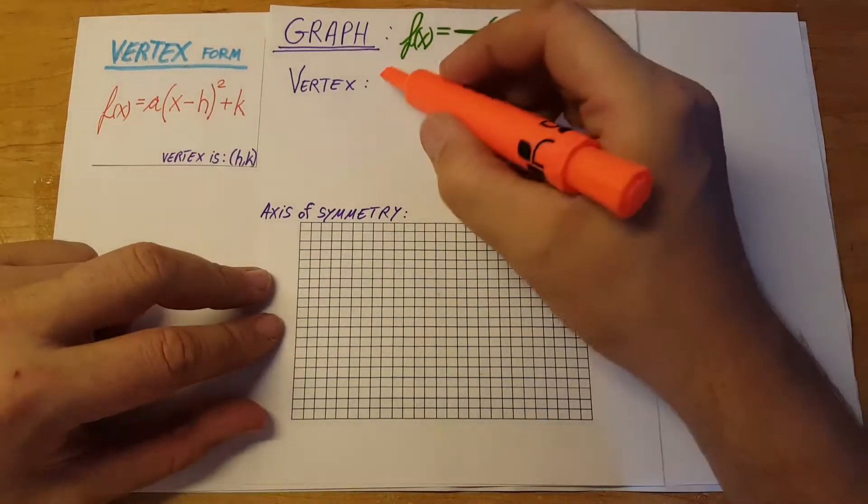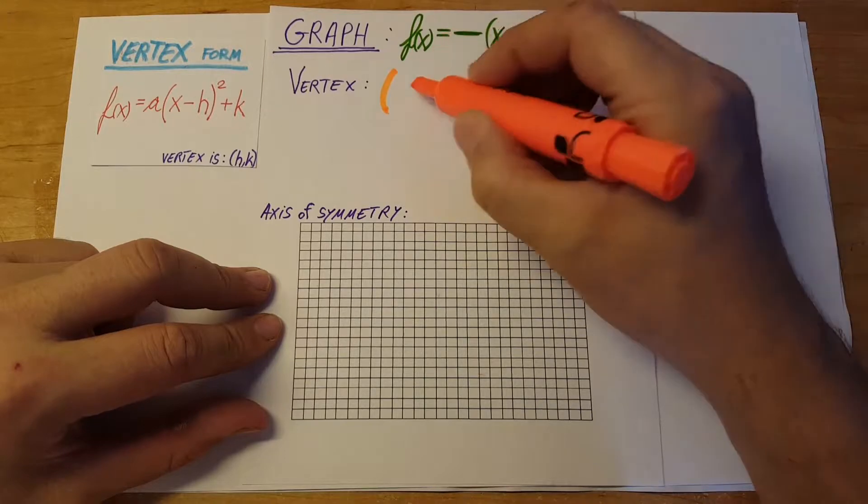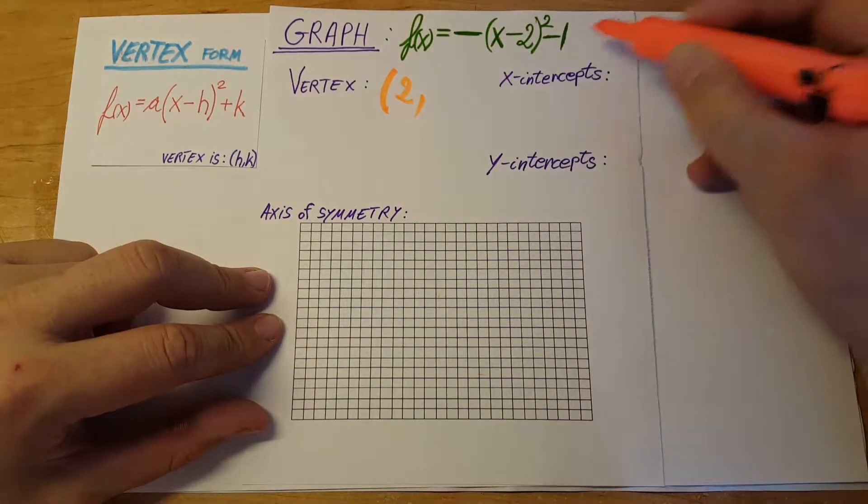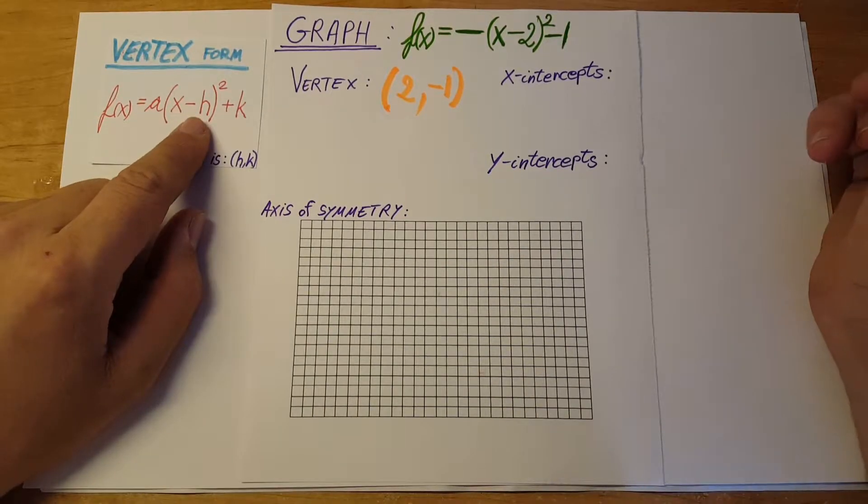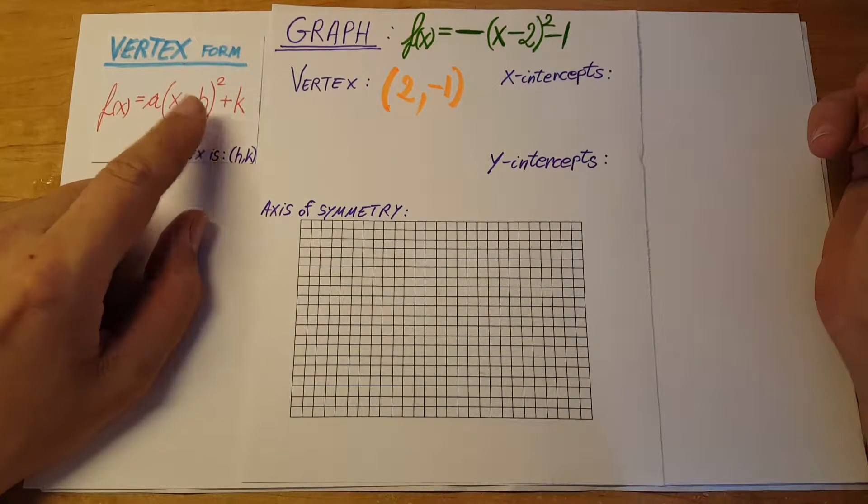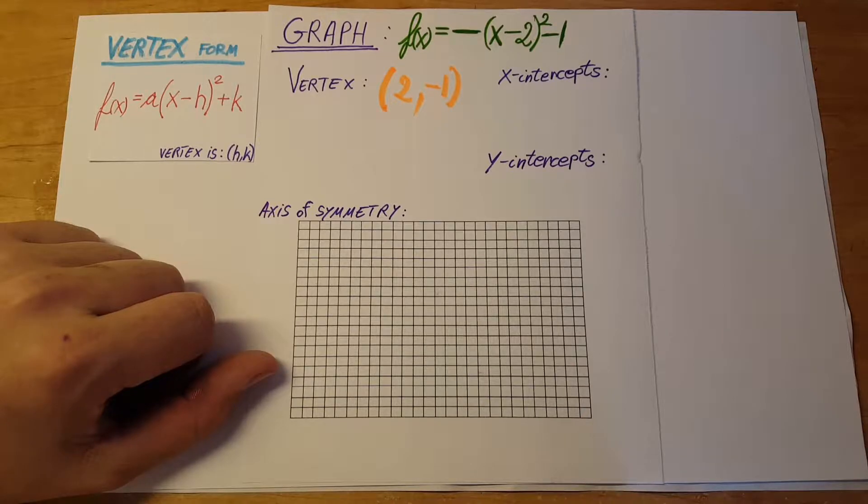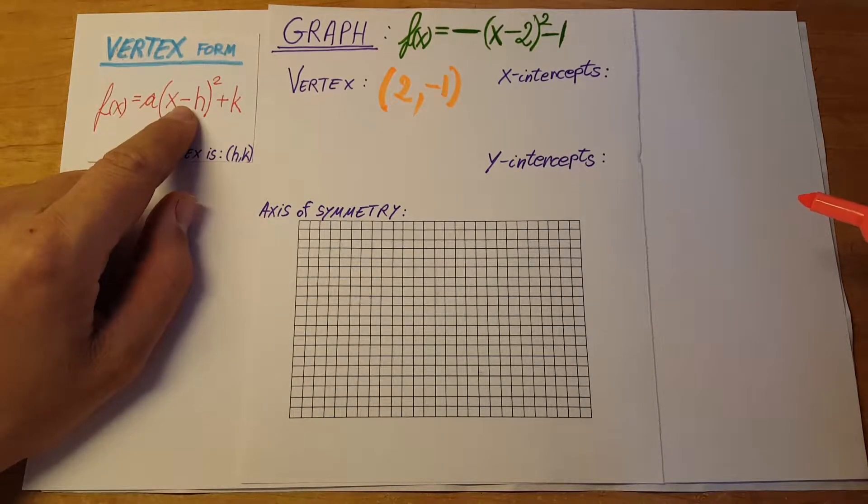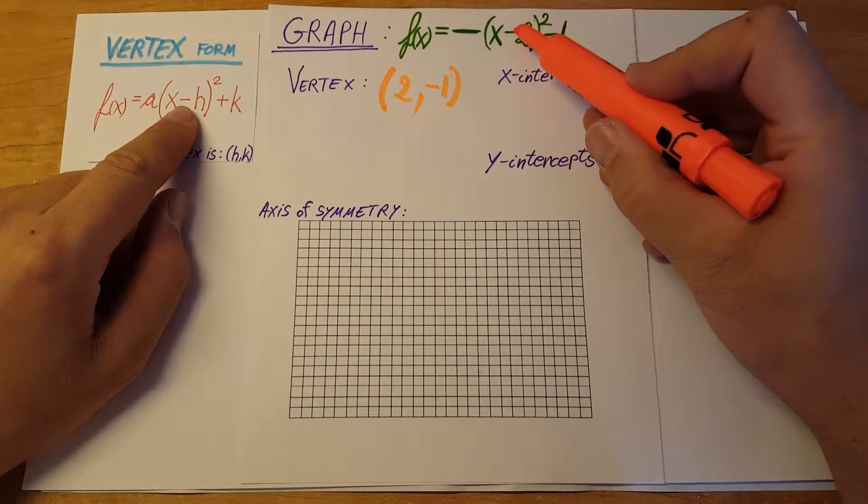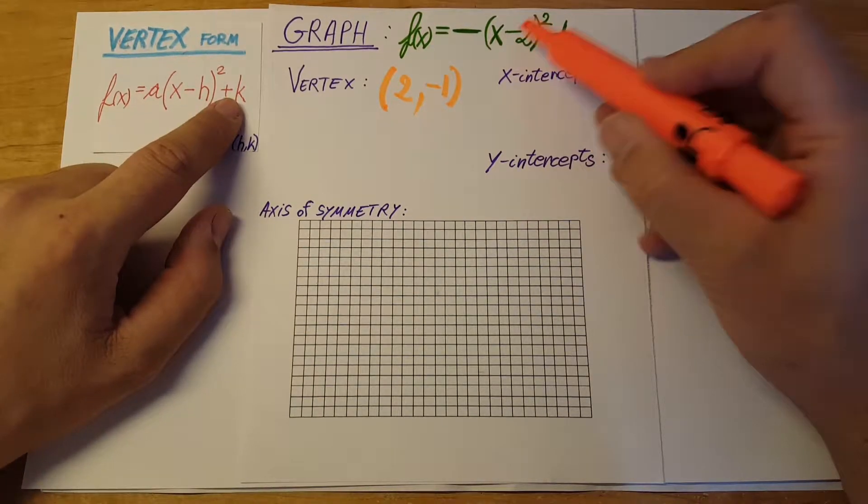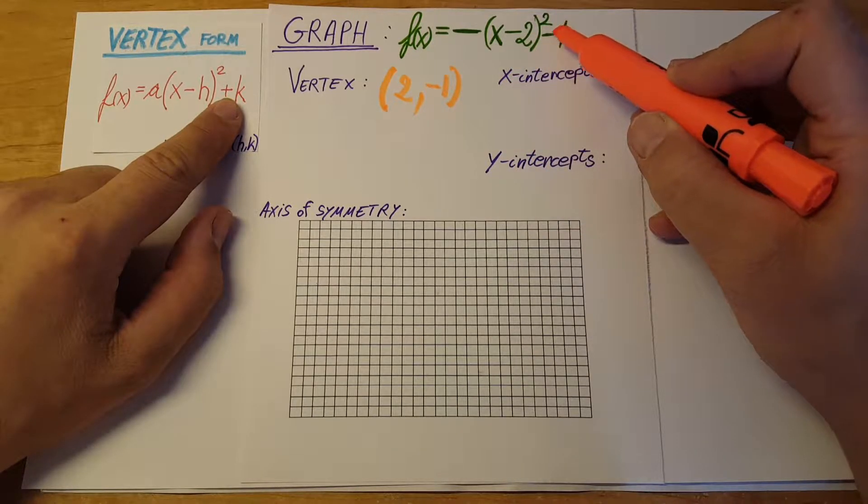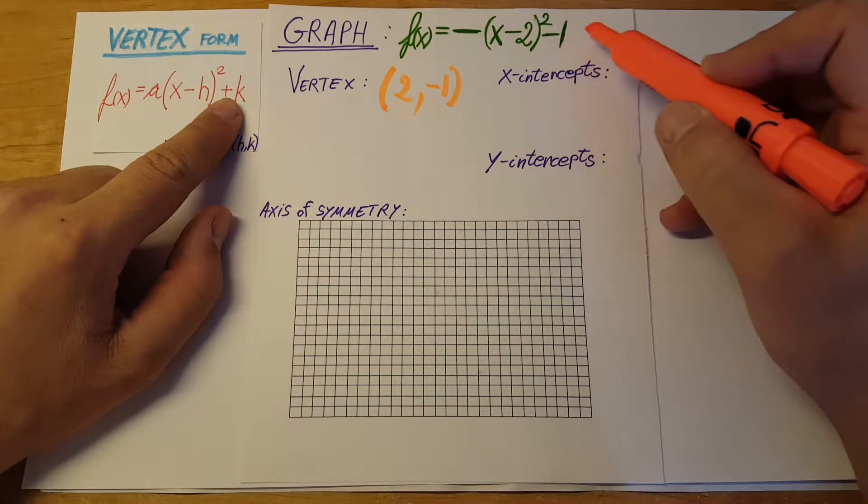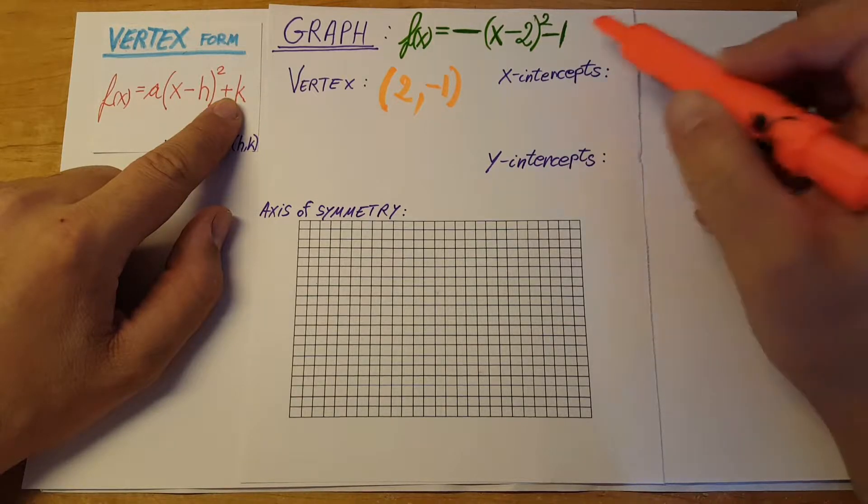Our vertex will be (2, -1), just like the formula shows. Make sure you take the correct values. There's a negative here in the formula, so that negative stays. There's a positive here, so in order to keep it positive, this would be like plus (negative 1). So we just take the negative 1, giving us (2, -1).